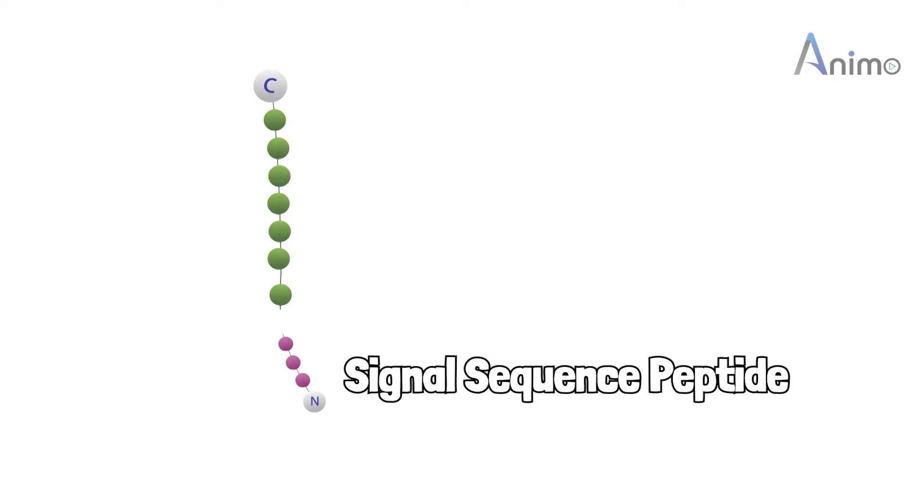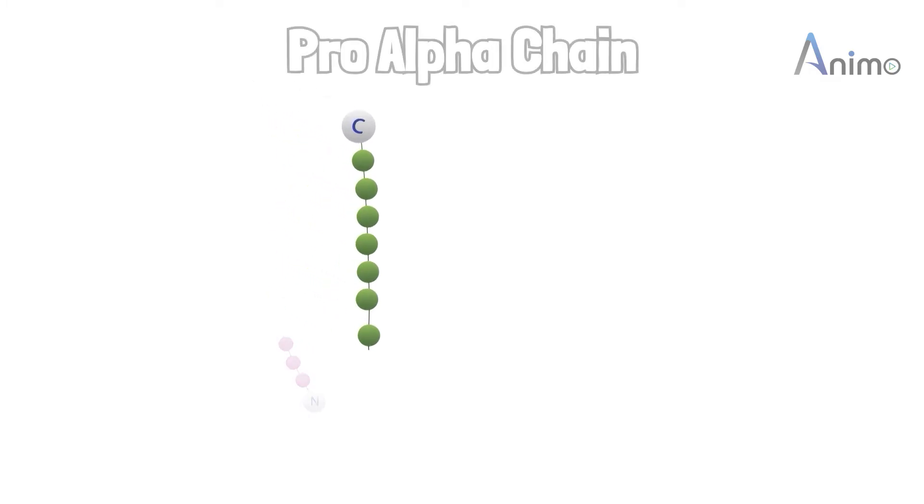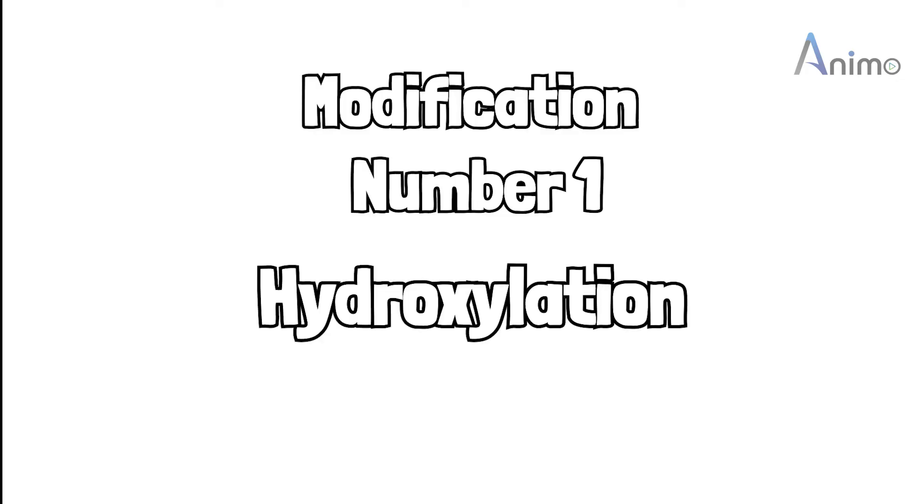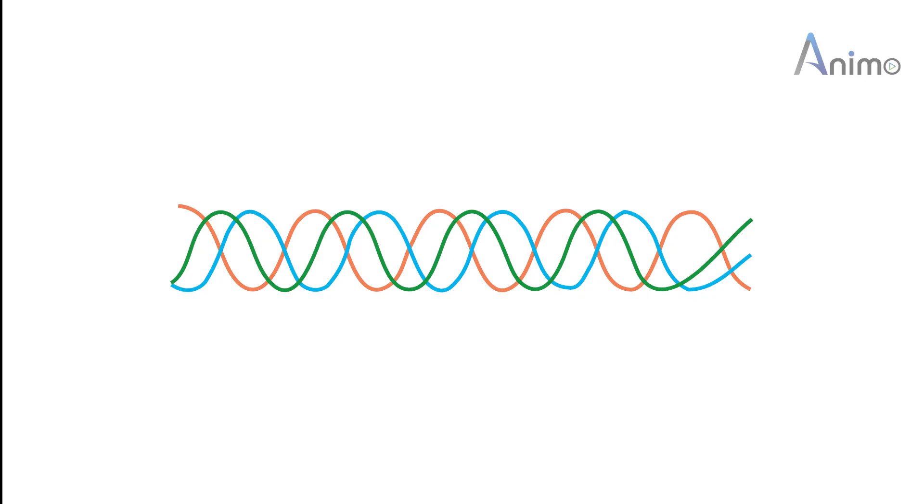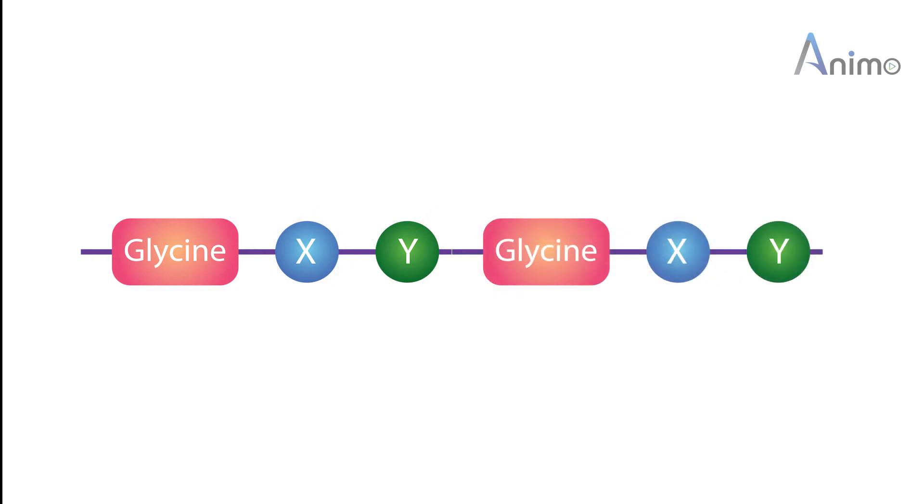After its removal, the remaining molecule is known as pro-alpha chain, and it undergoes some modifications. Number one: hydroxylation. Collagen has a specific sequence of amino acids such as glycine-X-Y. Here, X may be proline or lysine, and Y also initially has proline and lysine that undergoes hydroxylation.